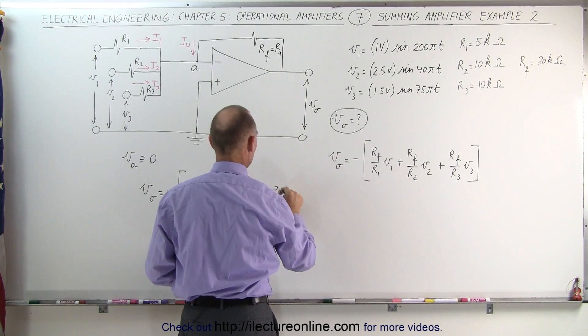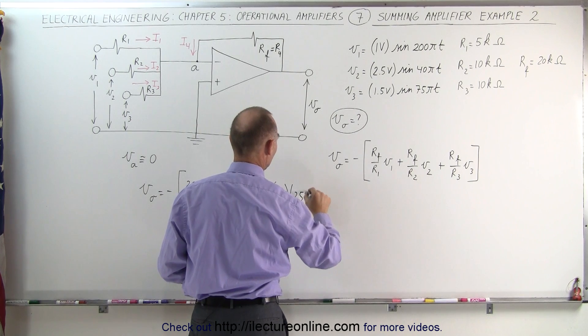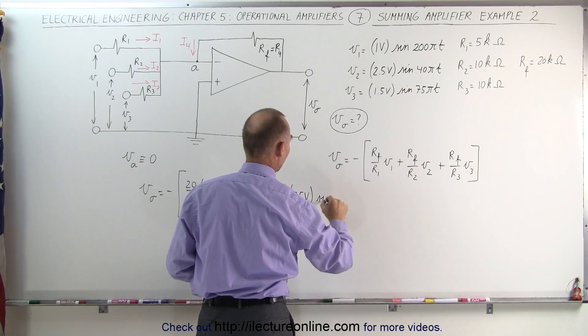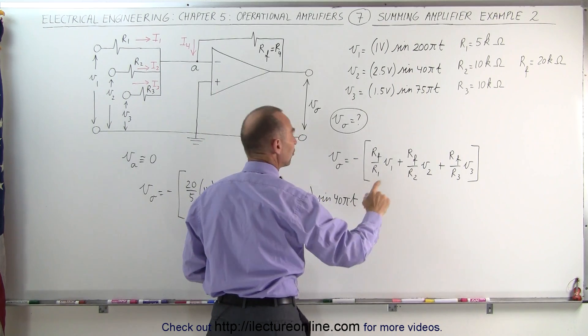Times 2.5 volts times the sine of 40 pi T, plus the ratio of R sub F to the third resistor, which is 20 also to 10.